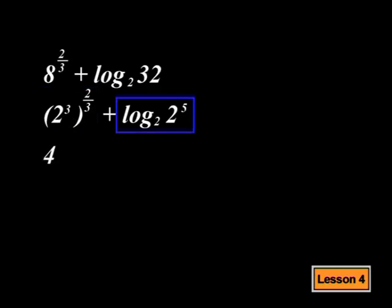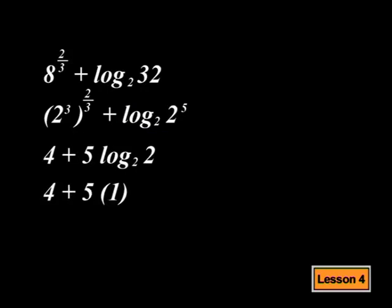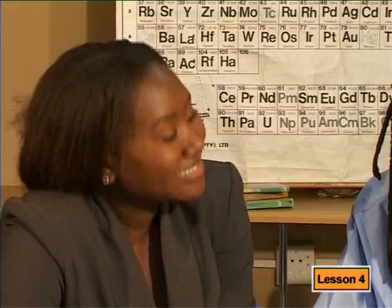For the log, I can apply the law that says that if you have a number raised to a power, you move the power to the front and multiply, which gives me 5 times log base 2 of 2. Now, the base and the number in the log are both 2, so the log is equal to 1. That gives me 4 plus 5 times 1, which is equal to 9. Well done, Debuhu.